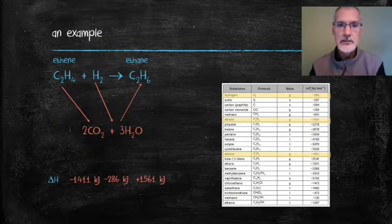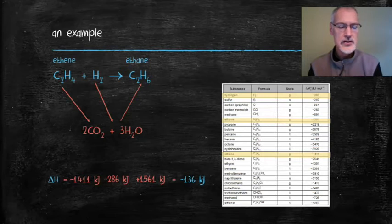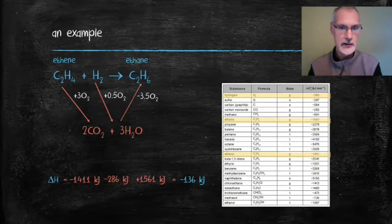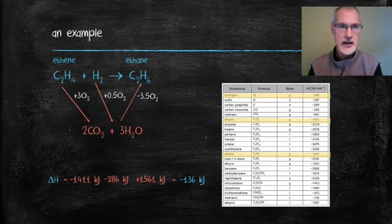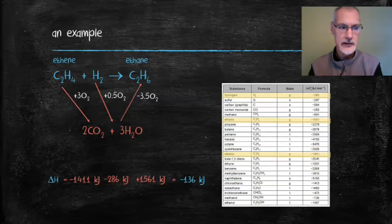Now I'd like to address the balancing of oxygen. The combustion of ethene requires three oxygen molecules and the combustion of hydrogen half an oxygen molecule for a total of three and a half oxygens. The combustion of ethane also requires three and a half oxygens. However, remember that I reversed that reaction so I don't add three and a half but subtract three and a half oxygens. That now completes the enthalpy cycle for this example.